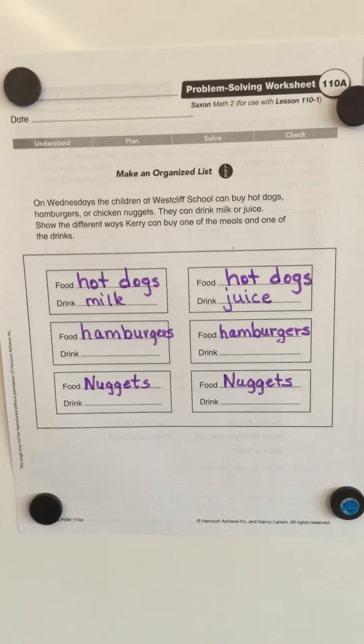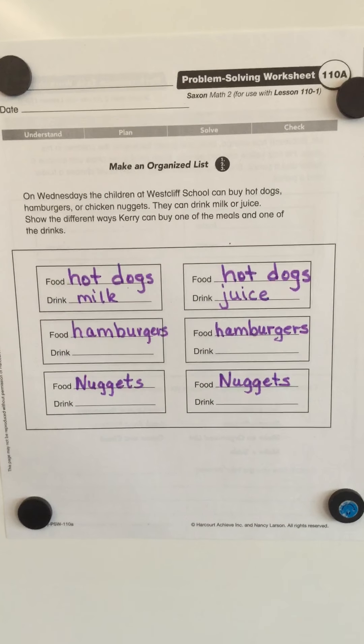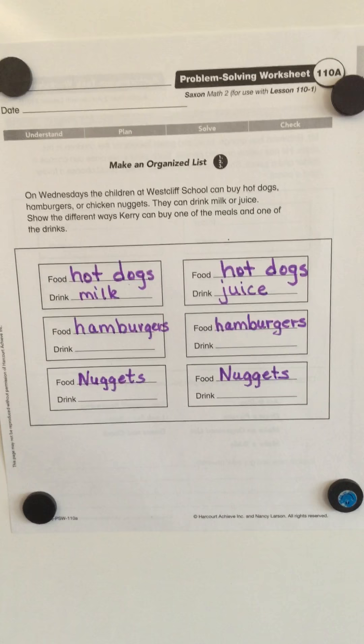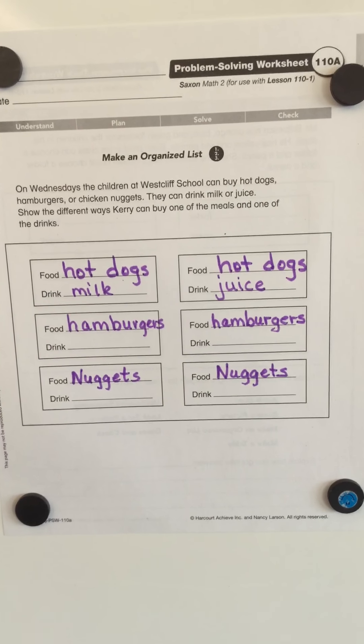On Wednesdays, the children at Westcliff School can buy hot dogs, hamburgers, or chicken nuggets. They can drink milk or juice. Show the different ways Carrie can buy one of the meals and one of the drinks.